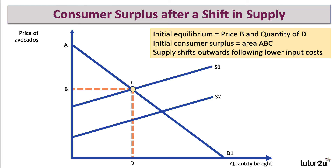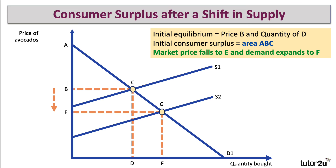That means the lower cost of production will feed into a lower market price, which falls from B to E. Demand expands — we move along the demand curve down from D to F, or from C down to G. So a lower price has caused an expansion in the level of demand.